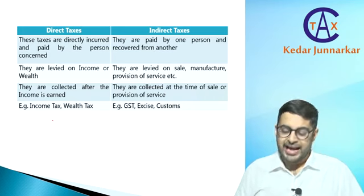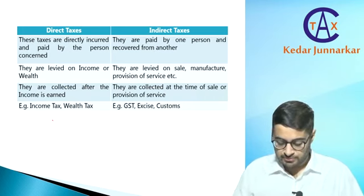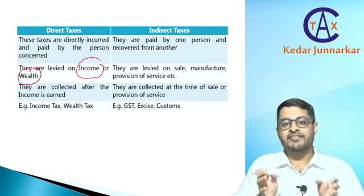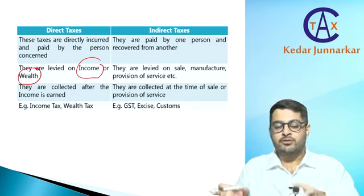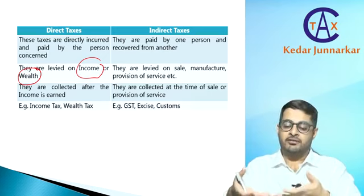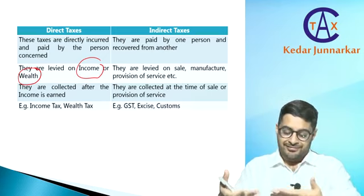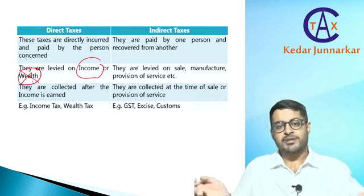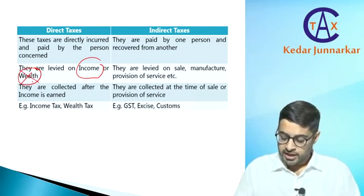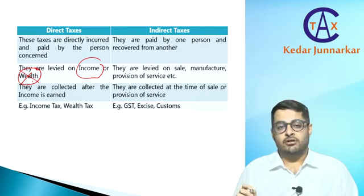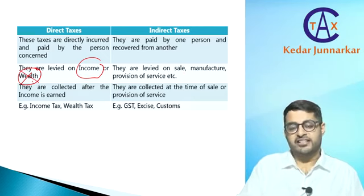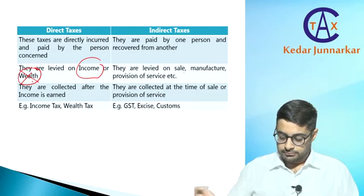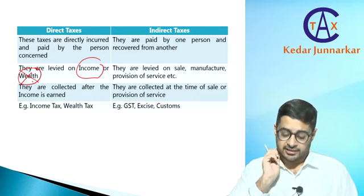Direct taxes: incurred and paid by the same person. Indirect taxes: recovered from one person, paid by another. Direct taxes are levied on income or wealth — income tax is on income, wealth tax has been abolished. Indirect tax is charged on sale, manufacture, or provision of goods and services.